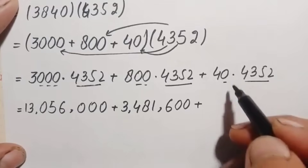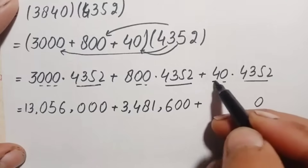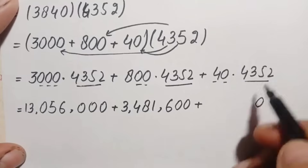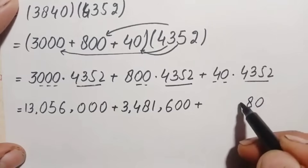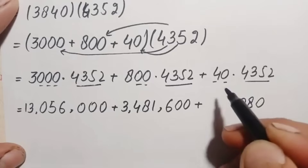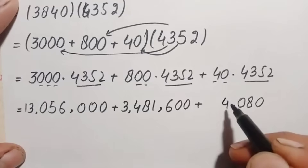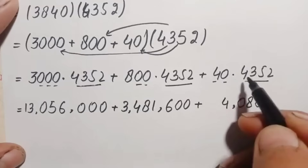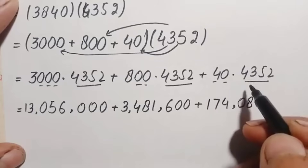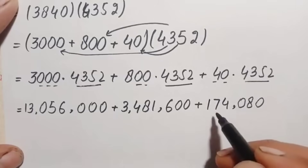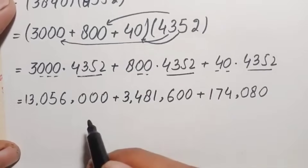Multiplying 40 times 4352: the zero contributes a zero, and 4 times 4352 gives 4 times 2 is 8, 4 times 5 is 20 (write 0 carry 2), 4 times 3 is 12 plus 2 is 14 (write 4 carry 1), 4 times 4 is 16 plus 1 is 17. So 40 times 4352 is 174,080.